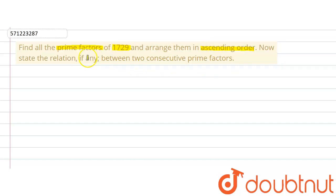Now state the relation, if any, between two consecutive prime factors. Then state the relationship between two consecutive prime factors, if there is any.